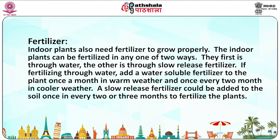Indoor plants also need fertilizer to grow properly. Indoor plants can be fertilized in one of two ways: through water or through slow-release fertilizers. If fertilizing through water, add a water-soluble fertilizer to the plant once a month in warm weather and once every two months in cooler weather. A slow-release fertilizer can be added to the soil once every two or three months.